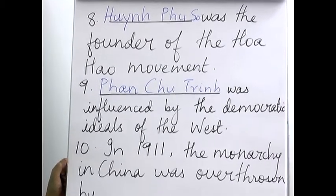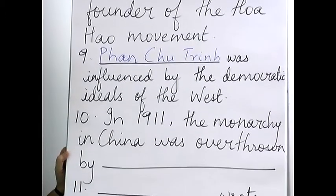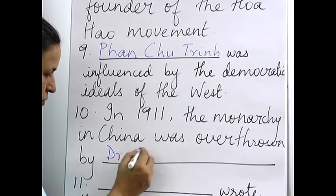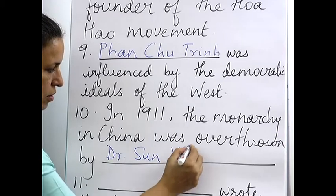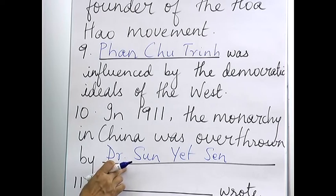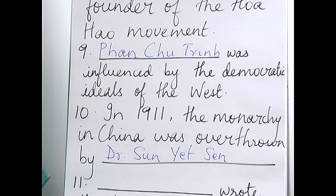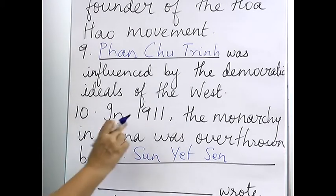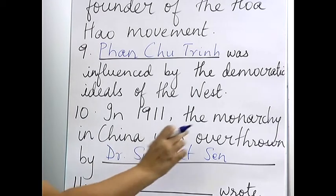Tenth: in 1911 the monarchy in China was overthrown by Dr. Sun Yat-sen. It can be asked: in which year did Dr. Sun Yat-sen overthrow the monarchy in China? The monarchy was known as the Manchus from Manchuria. You write 1911. Or: whom did Dr. Sun Yat-sen overthrow in 1911? You write the monarchy in China.